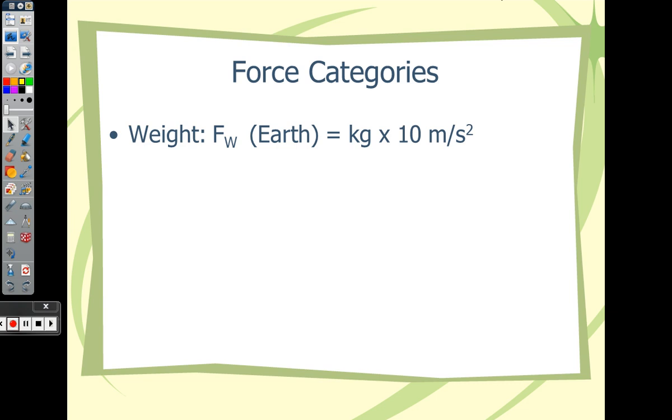What direction is that force going to be, that force arrow going to be drawn? Downward, right. Gravity is pulling you down, right? So that arrow, force of weight, is always going to be going down, towards the center of the earth. So, right now, as you're sitting in your chair, there's a force of weight arrow pushing down against the chair, right? So, why are you not falling through the chair?